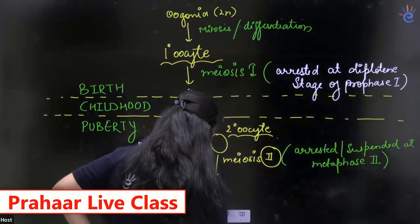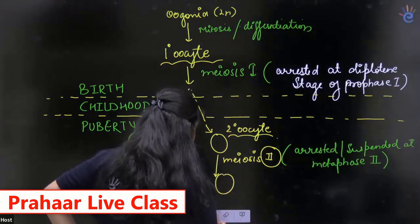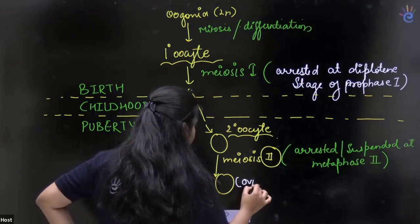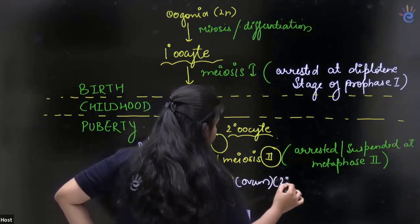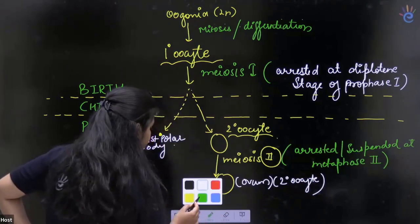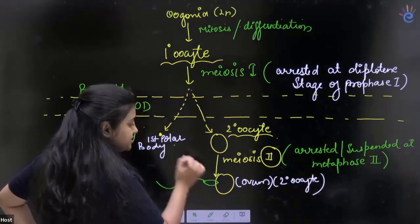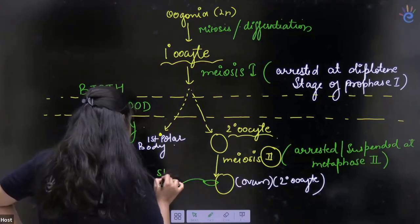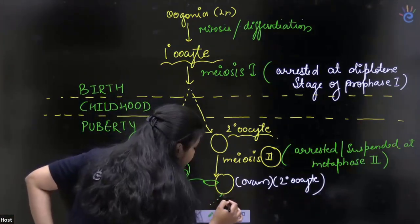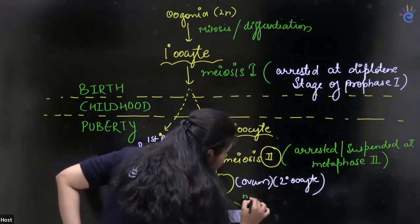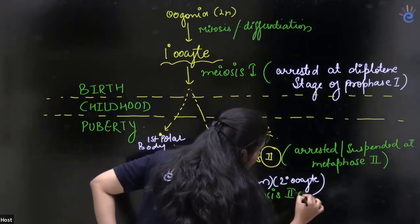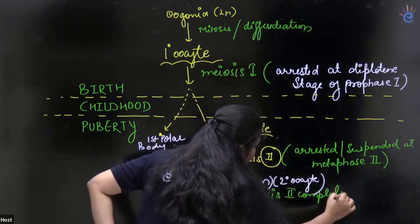What is the dependency on it? Tell me, this is a proper secondary oocyte. What is the dependency? Sperm. If sperm comes, then meiosis 2 completes.